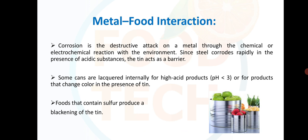Metal-food interaction: corrosion is the destructive attack on a metal through chemical or electrochemical reaction with the environment. Since steel corrodes rapidly in the presence of acidic substances, tin acts as a barrier. Some cans are lacquered internally for high-acid products in which pH is less than 3, or for products that change color in the presence of tin. Foods that contain sulfur produce a blackening of the tin.